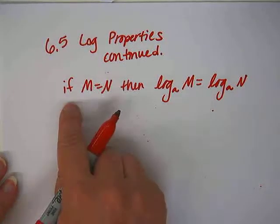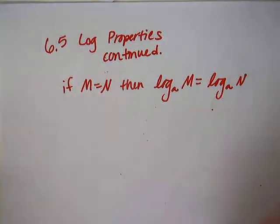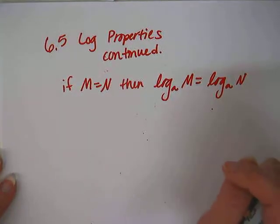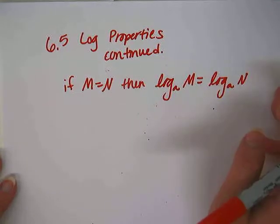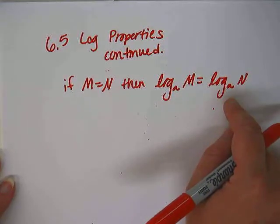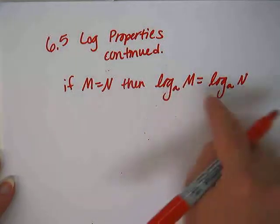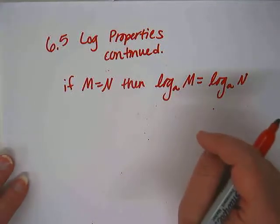This is like our golden rule of algebra. As long as you do something to both sides of the equation, it's perfectly legal. So just like we could add a number to both sides, or divide a number from both sides, or square both sides, we can take the logarithm of both sides. Any base you want to, as long as it's the same base on both sides.